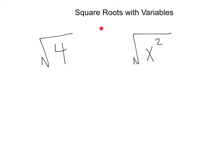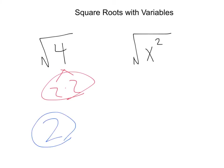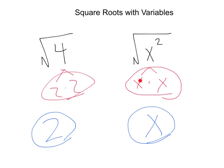So we've been working with square roots, but what happens when we throw some variables into the mix? Here we have a square root of 4 and a square root of x squared. We know square root of 4 is 2 — if we factor it down, that's 2 times 2, a pair of 2's. And for x squared, that's x times x; since we've got a pair of x's, the x is what comes out as our answer. The same basic principle of breaking things down into perfect squares or into pairs is going to work with variables.